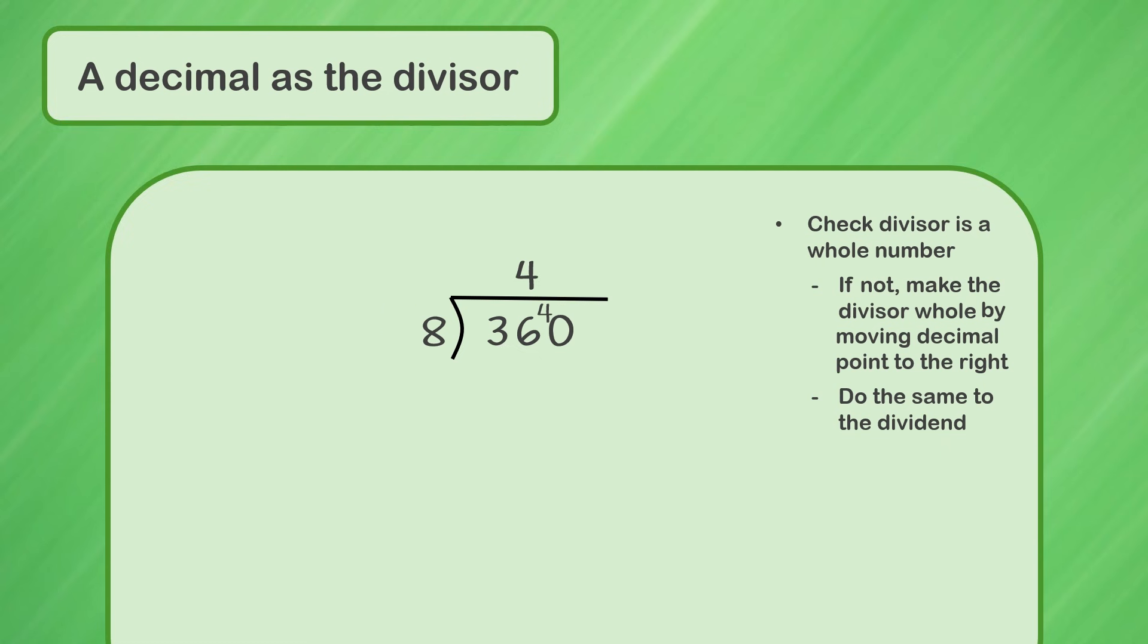How many times does 8 go into 40? It goes evenly 5 times. We write 5 on the line above the 0. 360 divided by 8 equals 45. This means 36 divided by 8 tenths is the same, 45.